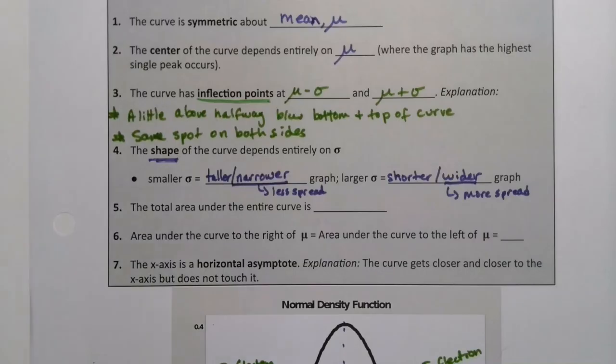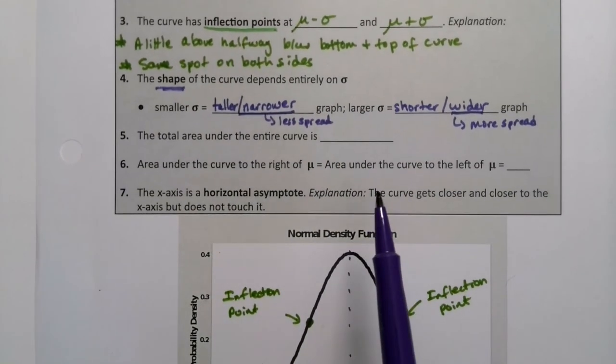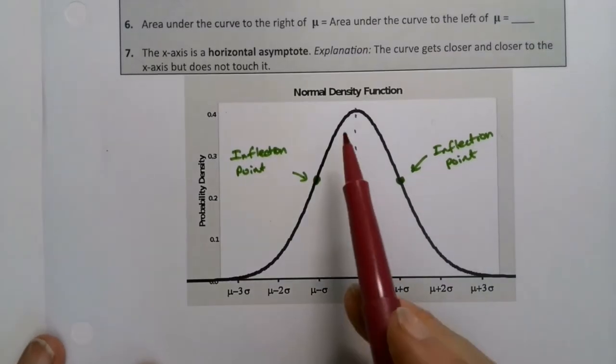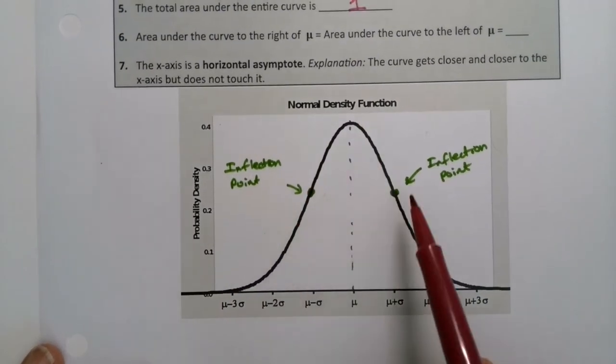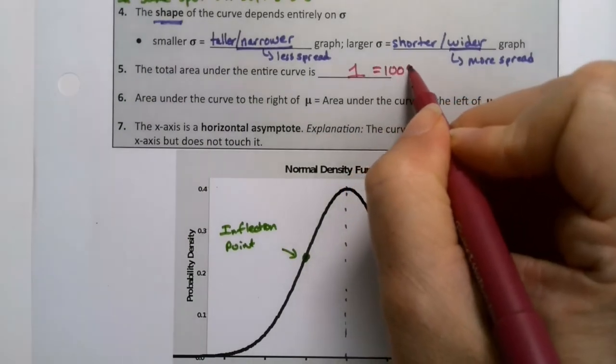Now, the total area under the curve, well, it's a probability curve. So it had better be one, otherwise we're in big trouble. It better be one because it's probability. And that means, well, let's think about this. If the whole curve, the area under the entire curve is one or 100%, we use both of them.